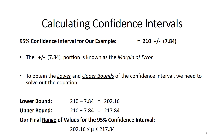To obtain the lower and upper bounds of the confidence interval, we solve out the equation 210 plus or minus 7.84. The lower bound is computed by taking 210 minus the margin of error of 7.84, giving us 202.16. The upper bound is computed by taking 210 plus the margin of error of 7.84, giving us 217.84.